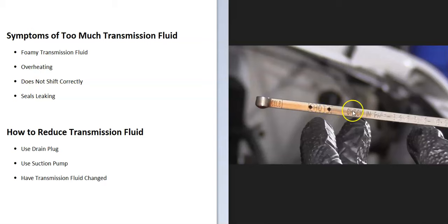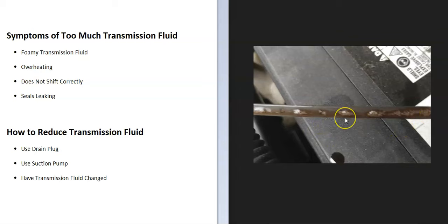What are some symptoms of too much transmission fluid? First of all, when you pull the transmission dipstick out, the fluid is going to look foamy and have bubbles in it. This can also be caused by other things like if condensation got in there, but foamy transmission fluid is very common when it's overfilled.